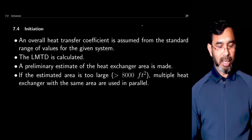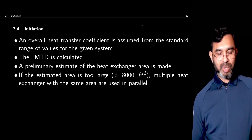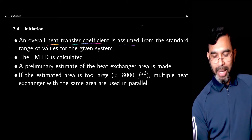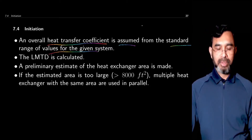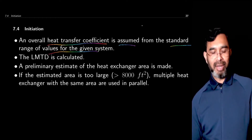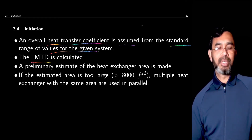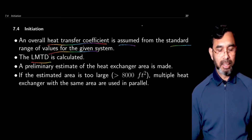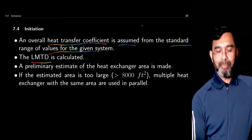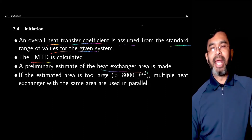Once the fluid allocation is done, the initial energy balance is complete, and you have confirmed there is no temperature crossover, the design procedure starts with the assumption of an initial heat transfer coefficient. This is done from standard range of values for the given system and fluid pair. We start with some assumed value within the given range and then calculate the log mean temperature difference. For a shell and tube heat exchanger, the log mean temperature difference is used. When you have the overall heat transfer coefficient assumed and the log mean temperature difference estimated, a preliminary estimate of the heat transfer area is made.